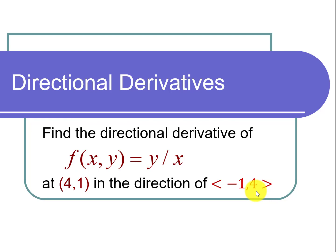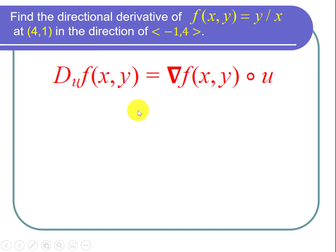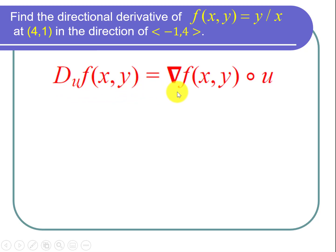We need our main key formula for directional derivatives. That states that the directional derivative in the direction of a unit vector of a function f, D-sub-u of f, is equal to the gradient of that function f dotted with that unit vector u.